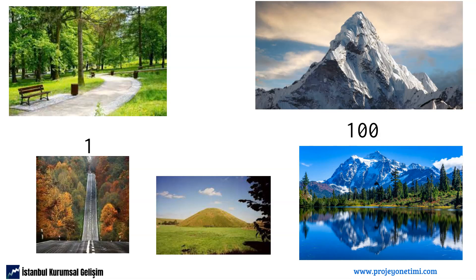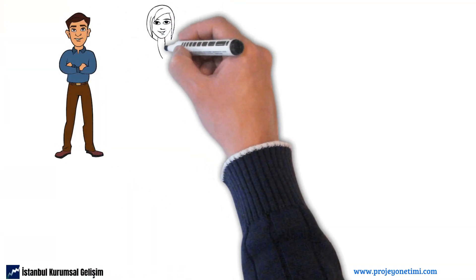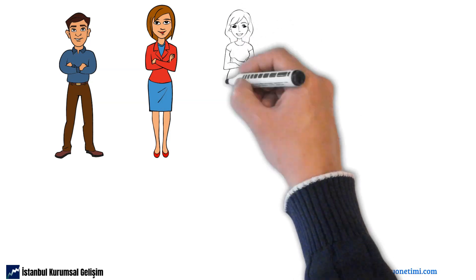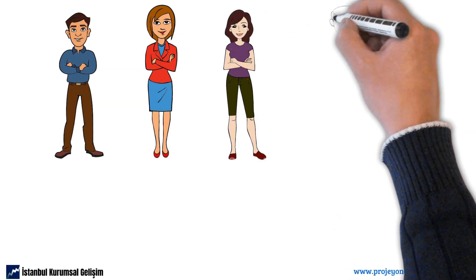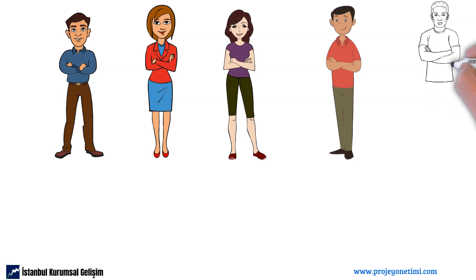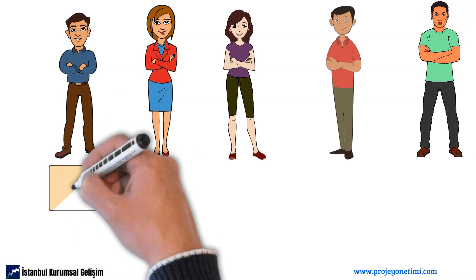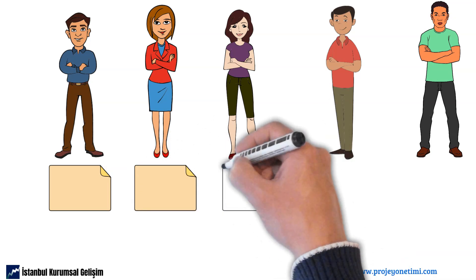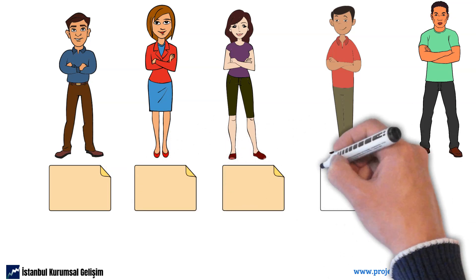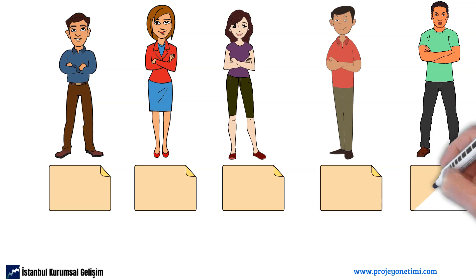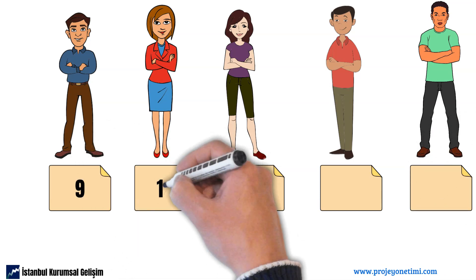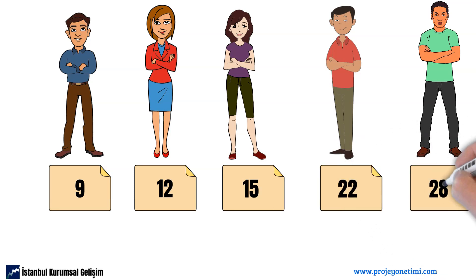There is no right or wrong with the numbers given during estimation. Each team member makes an estimate considering the difficulty and complexity of the job for themselves. Team members write their predictions for the item — preparing the starting page — independently on a piece of paper and show it to each other at the same time. The aim here is to ensure that they are not influenced by each other and that each makes an independent guess. For example, let them write numbers as 9, 12, 15, 22, 28.